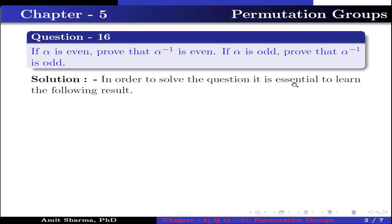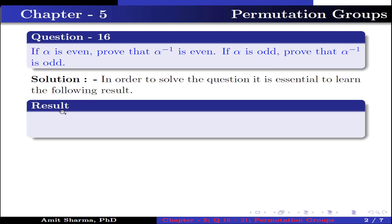In order to solve the equation, it is essential to learn the following result. Result: Any permutation of a finite set can be expressed as multiplication of 2-cycles. It is known as transposition.